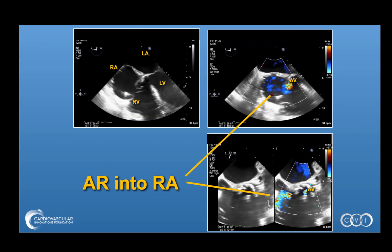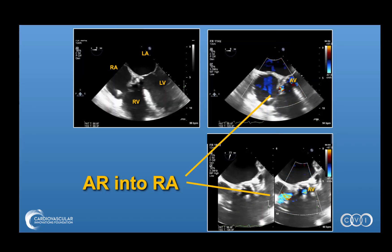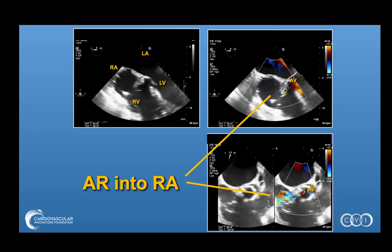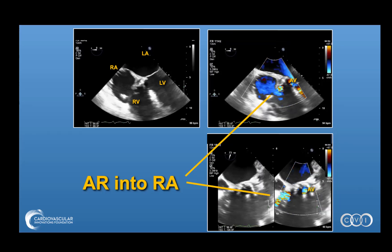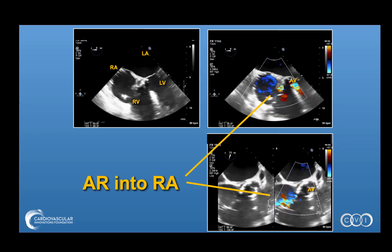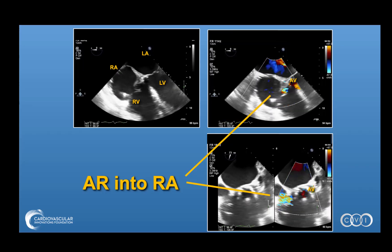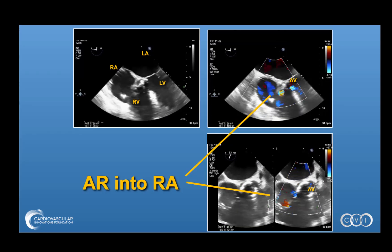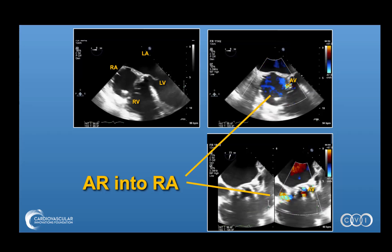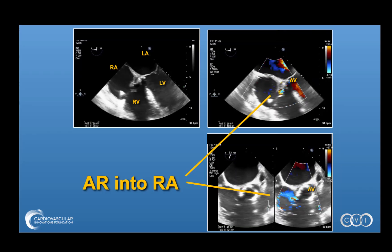Here are the baseline transesophageal views showing four chambers: right atrium, left atrium, right ventricle, and left ventricle. On the right-hand side with color flow imaging, one can see the regurgitation arising from the aortic valve and entering into the right atrium. These are off-axis views to show the degree of regurgitation between these two chambers.